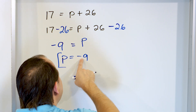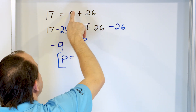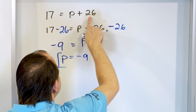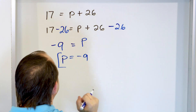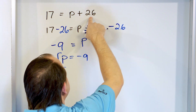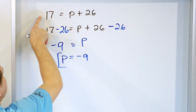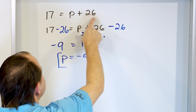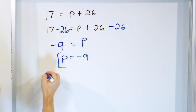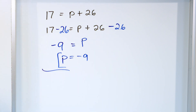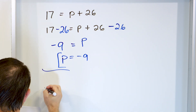We can check it: take negative 9 and put it in. Negative 9 plus 26 looks the same as 26 minus 9. If it were 26 minus 10 it would be 16, but it's minus 9, so it's 17. You can check all of these problems to verify you're getting the right answer.